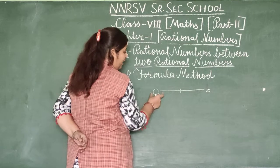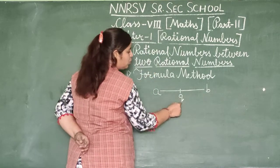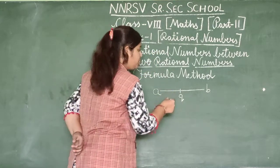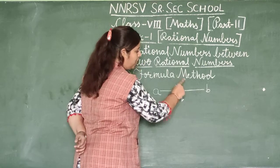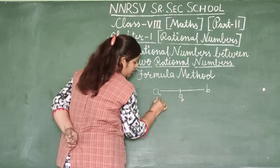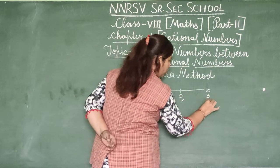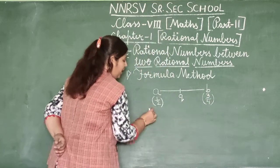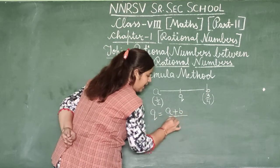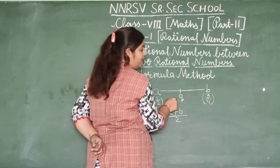What is the average method? We find Q, a rational number between A and B. The formula for Q is: Q = (A + B) / 2. For example, A = 1/2 and B = 3/4. If you want to find Q, the formula is Q equals A plus B divided by 2.